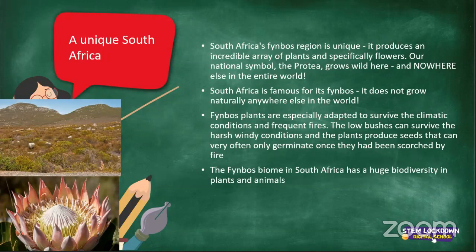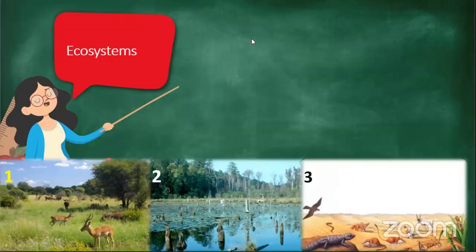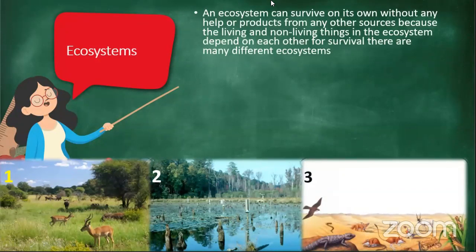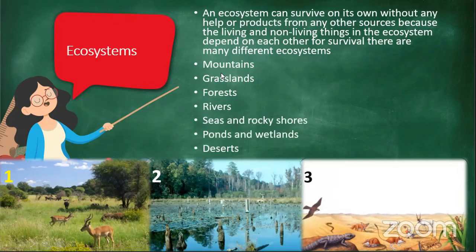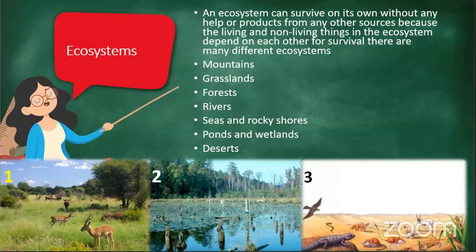The fynbos biome in South Africa has a huge biodiversity of plants and animals. An ecosystem can survive on its own without any help or products from other sources, because the living and non-living things in the ecosystem depend on each other for survival. There are many different ecosystems: mountains, grasslands, forests, rivers, seas and rocky shores, ponds and wetlands, and deserts. Now I want you to look at three pictures and tell me what ecosystem each one is.